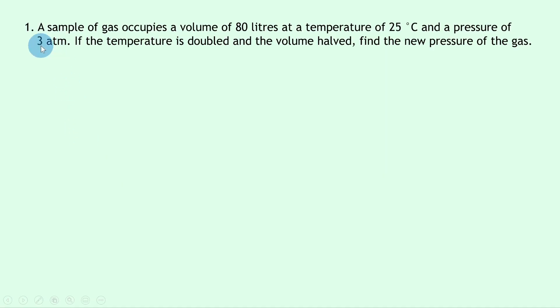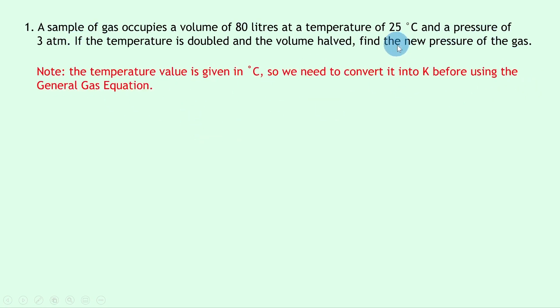Question 1 says that a sample of gas occupies a volume of 80 litres at a temperature of 25 degrees Celsius and a pressure of 3 atmospheres. If the temperature is doubled and the volume halved, find the new pressure of the gas. Firstly, note that the temperature is given in degrees Celsius, so we need to convert it into Kelvin before using the general gas equation, which only holds for temperatures in Kelvin.